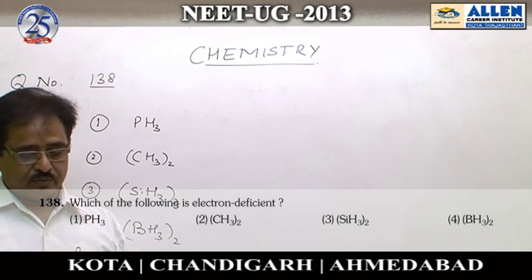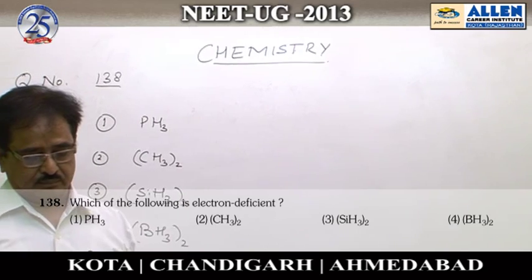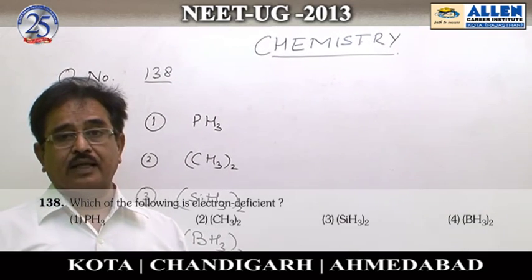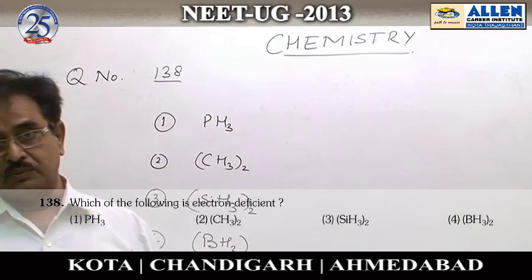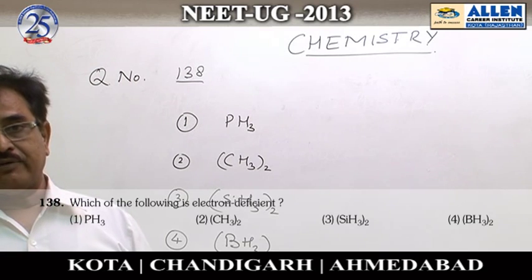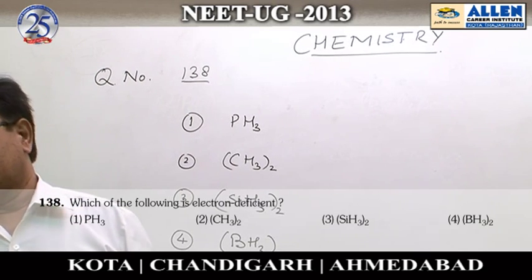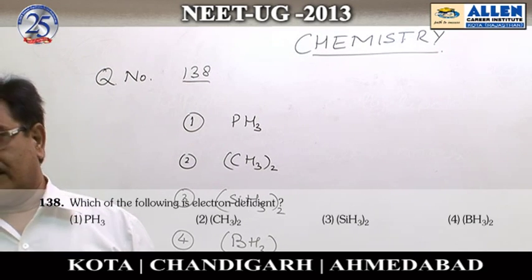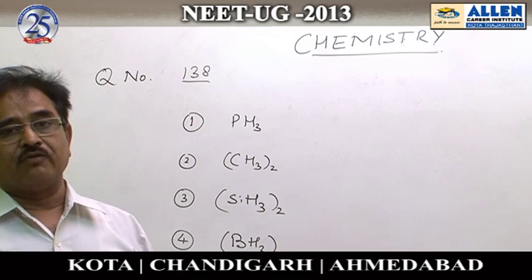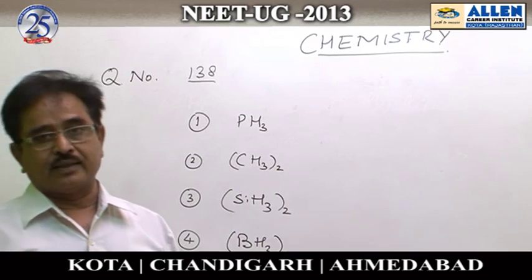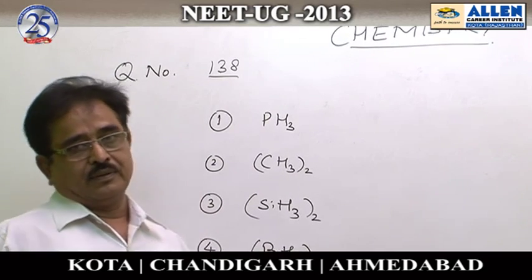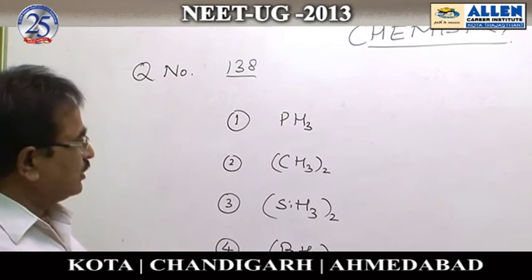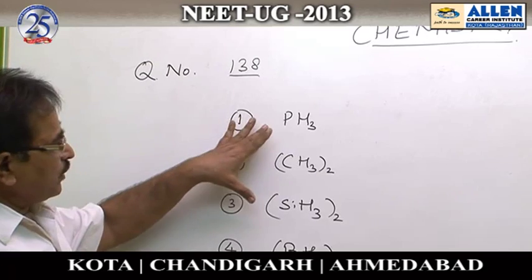Question number 138: which of the following is an electron deficient molecule? Molecules having less than 8 electrons in the valence shell of the central atom are electron deficient. In this question, the first option is PS3.